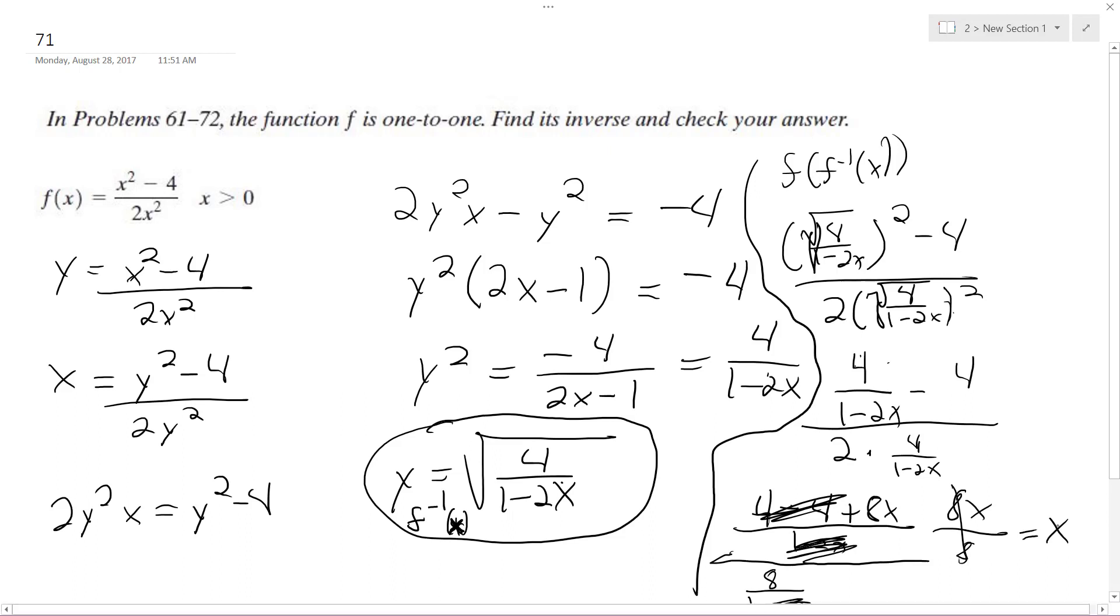at least for f of f inverse, it's equal to x. I'm pretty sure f inverse of f of x equals x also. So our inverse is the square root of 4 over 1 minus 2x. That's it.